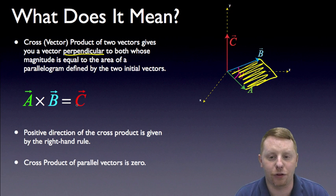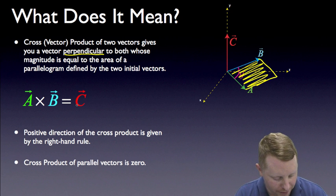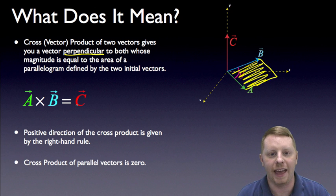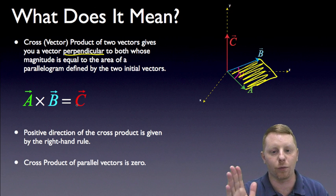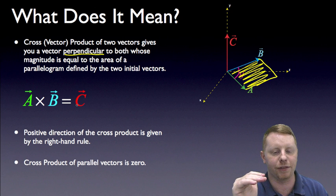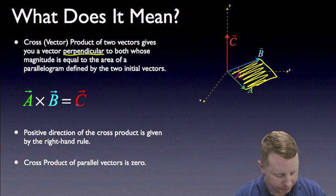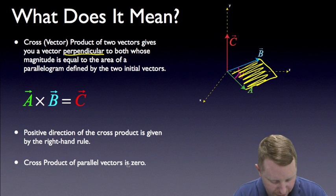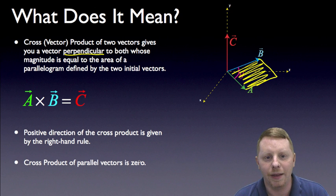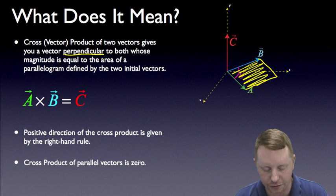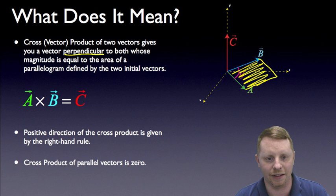The positive direction of the cross product is given by the right-hand rule. If you take a cross b, take the fingers of your right hand, point them in the direction of vector a, and then bend your fingers in the direction of vector b, your thumb is going to point in the positive direction for vector c, the vector product. The cross product of parallel vectors is zero, because the area of a parallelogram defined by parallel vectors is zero.